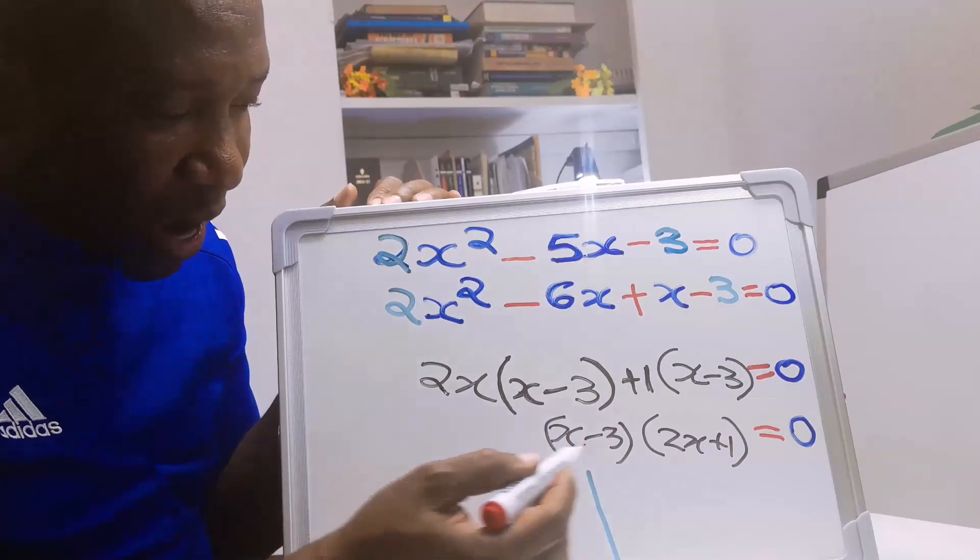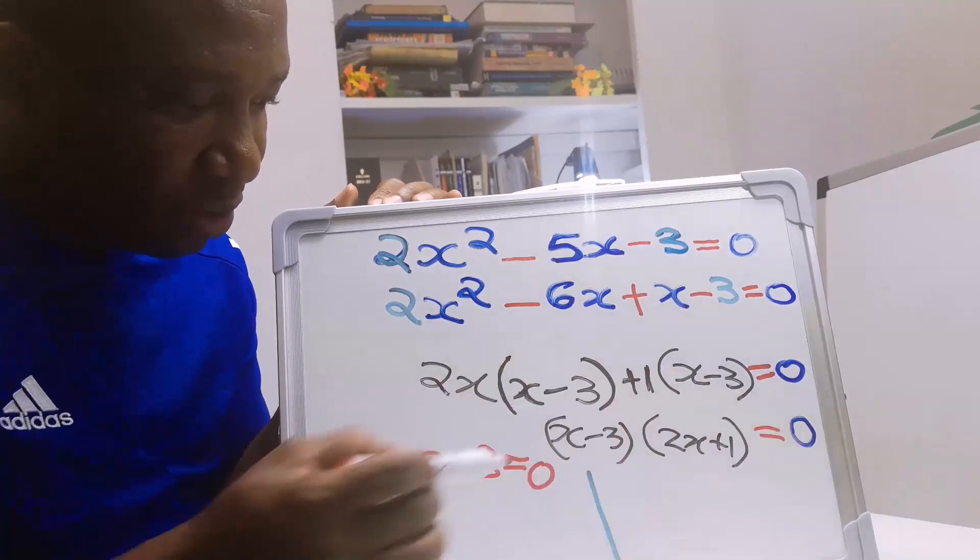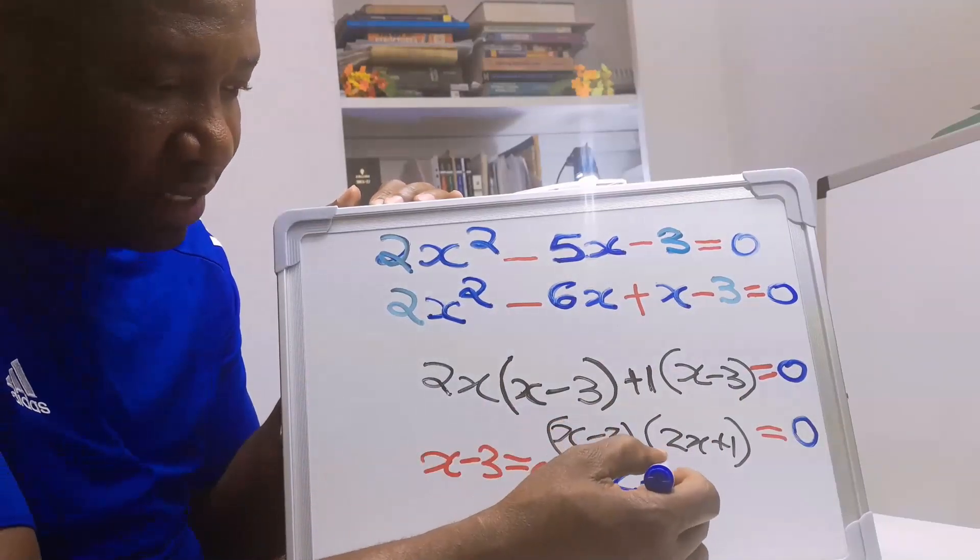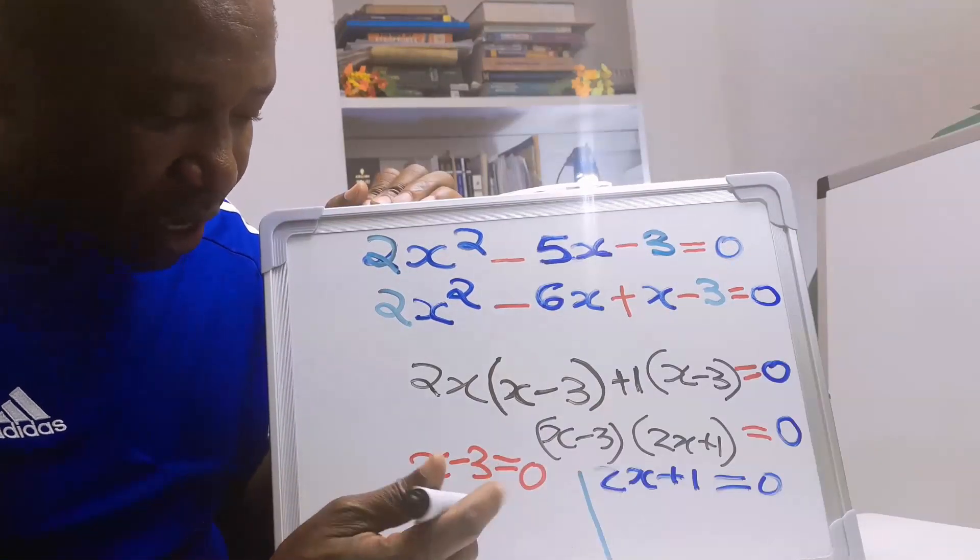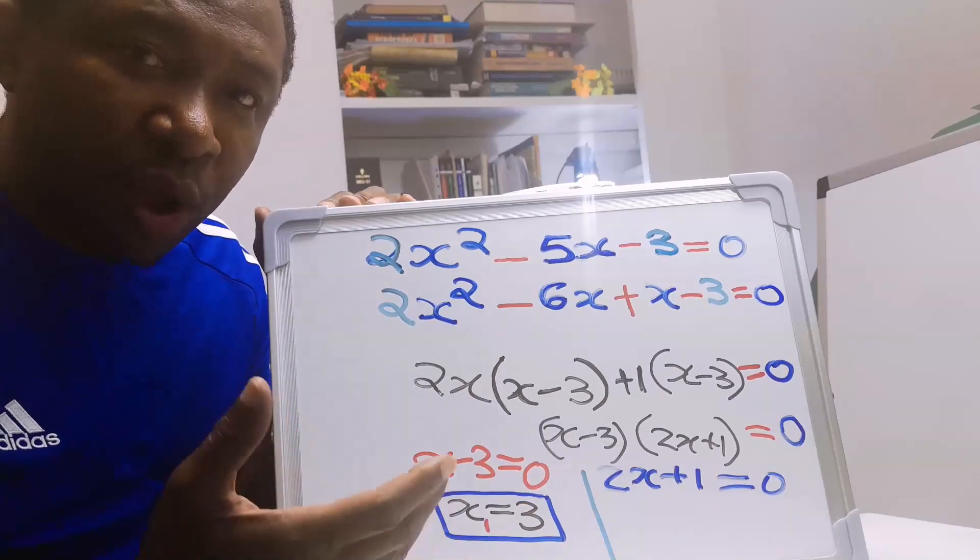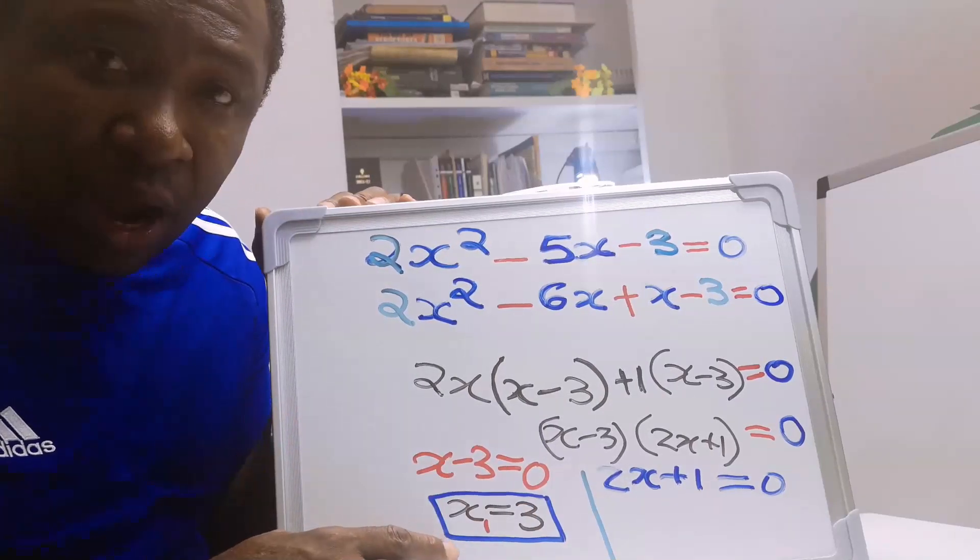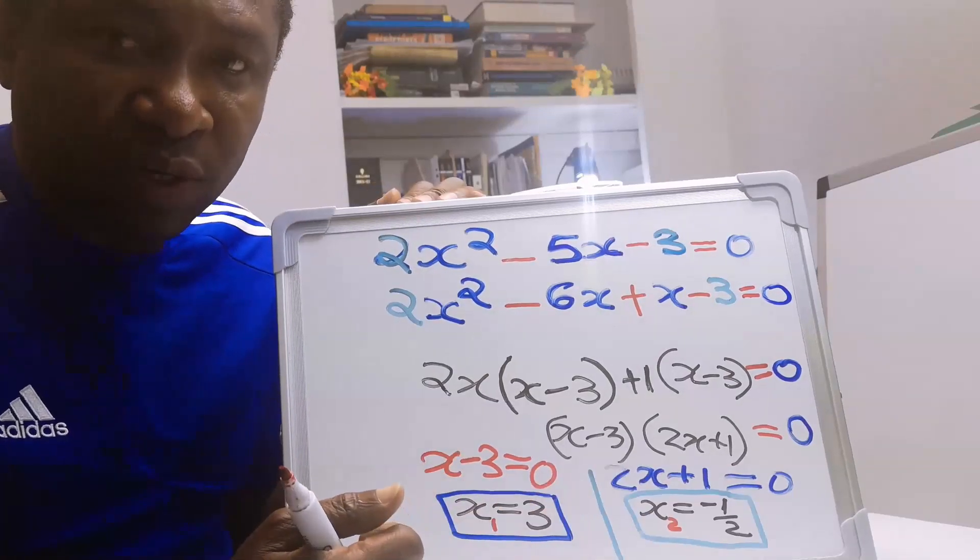Next, I will have that x minus 3 is equals 0. Also, that 2x plus 1 is also equals 0. From x minus 3 equals 0, x is equals 3, and we have obtained the value for our x1. Next, for x2, we have minus 1 over 2.